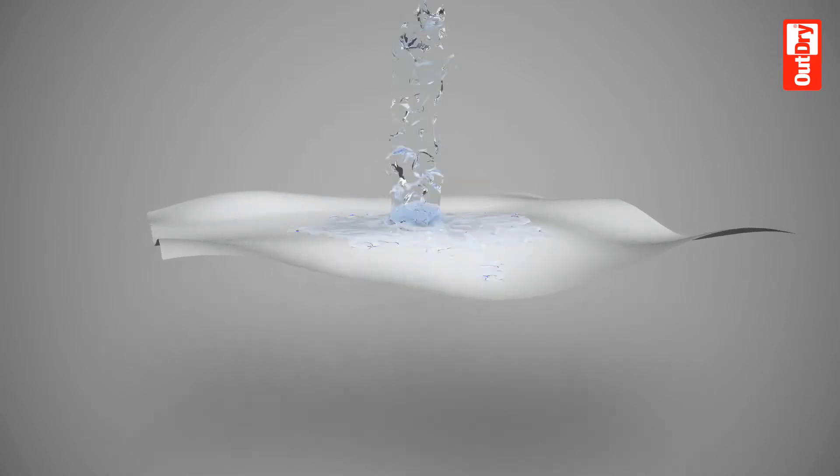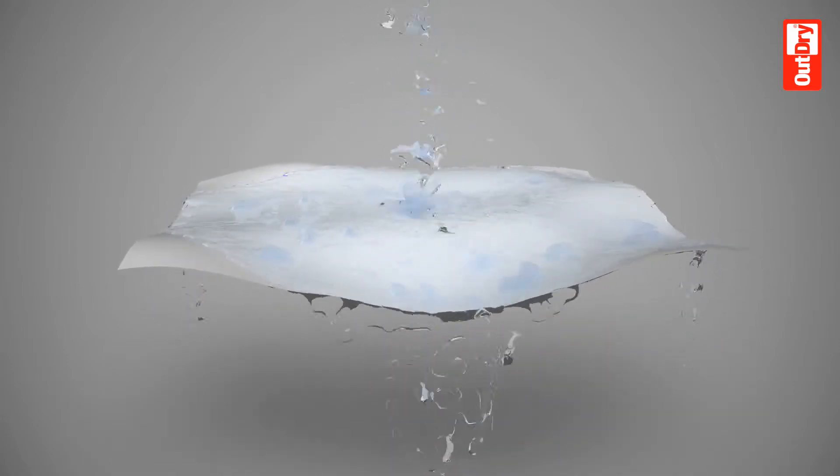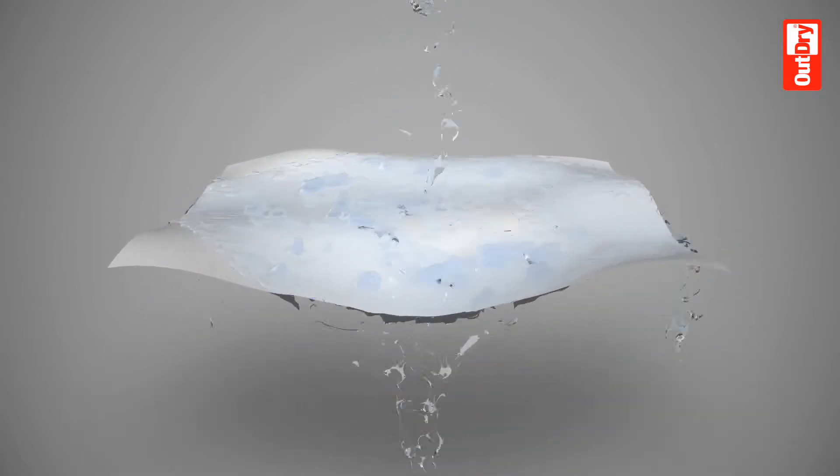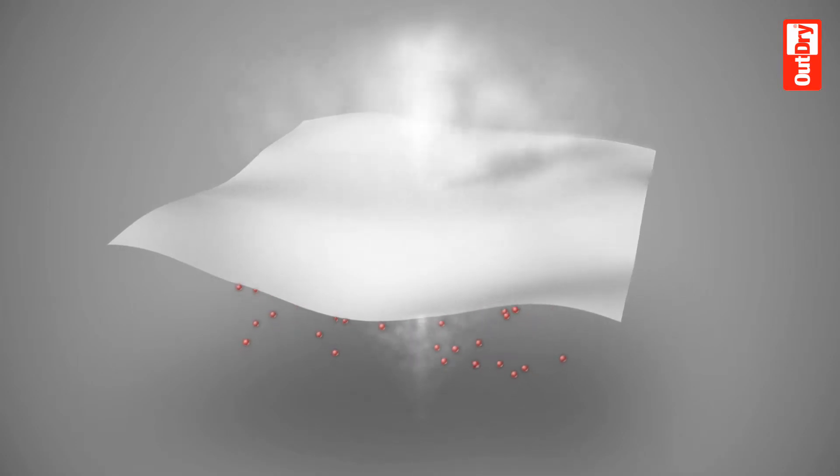The OutDry membrane is specifically designed to optimize the lamination process and ensures the utmost comfort for the user. Its properties are truly unique. While very thin and light, the membrane is absolutely 100% waterproof and highly breathable, allowing body moisture to escape naturally.